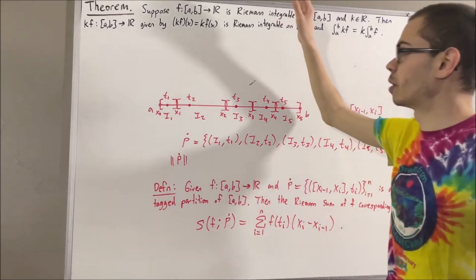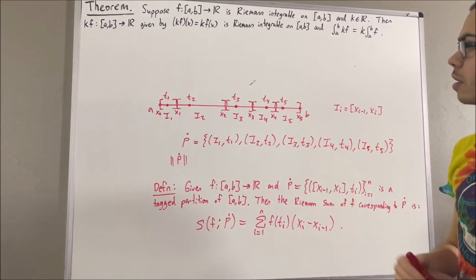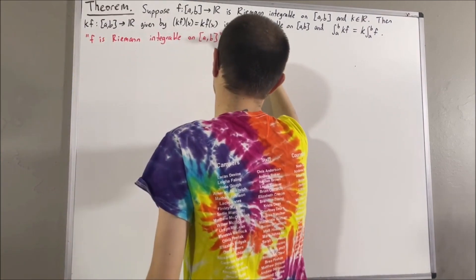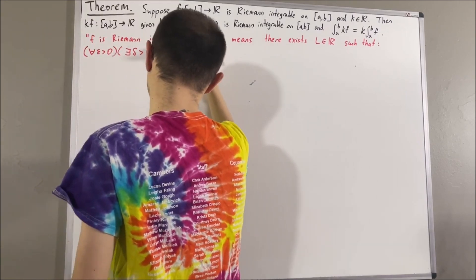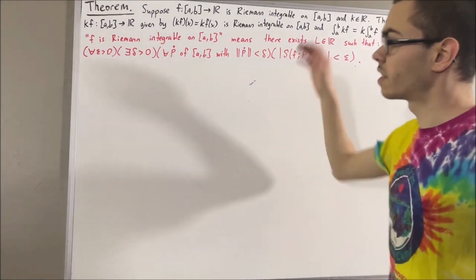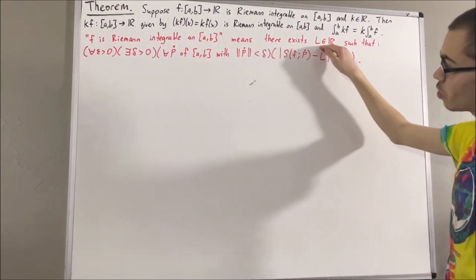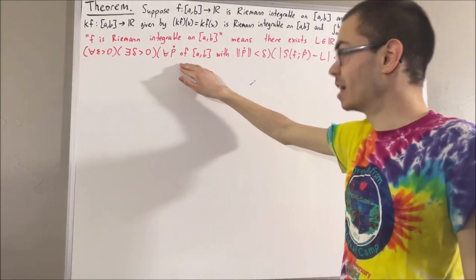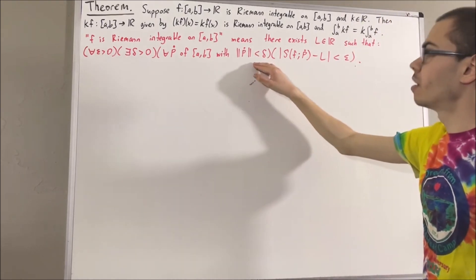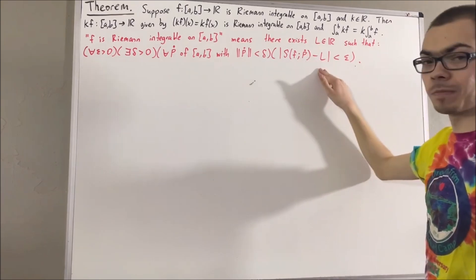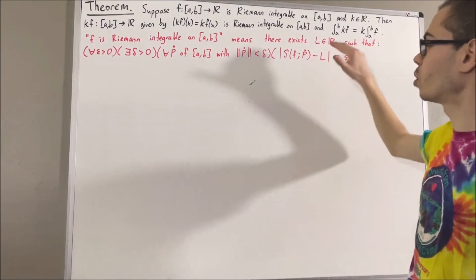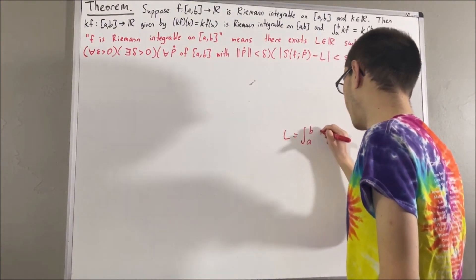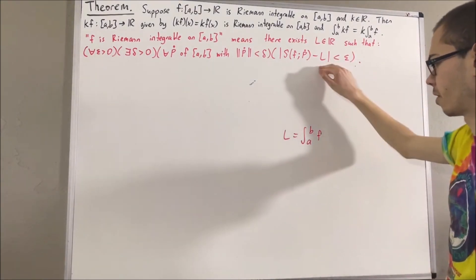Now let's talk about what it means to be Riemann integrable on [a, b]. To say f is Riemann integrable on [a, b] means that there exists a real number L such that for every ε > 0, there exists a δ > 0 such that for all tagged partitions of [a, b] whose norm is less than δ, the absolute value of the Riemann sum minus L is less than ε. We have proven that this real number L is unique, and we denote it as the integral from a to b of f.